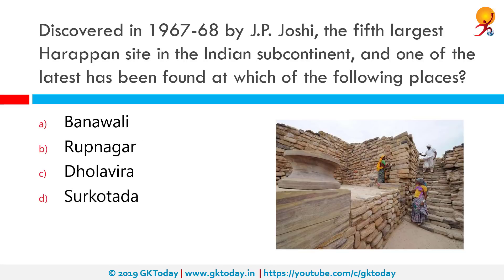Discovered in 1967-68 by J.P. Joshi, the fifth largest Harappan site in the Indian subcontinent and one of the latest has been found at which of the following places? Correct answer is Dholavira. Dholavira is located on the Khadira island in the Kutch district of Gujarat.